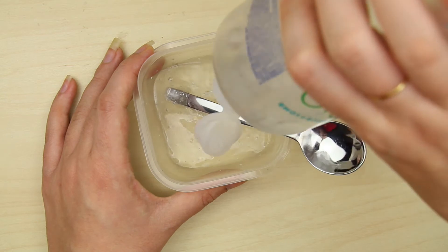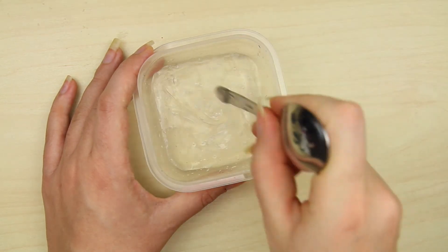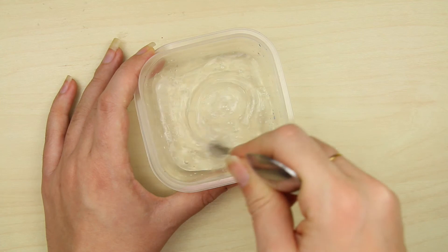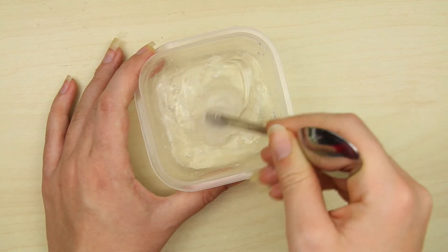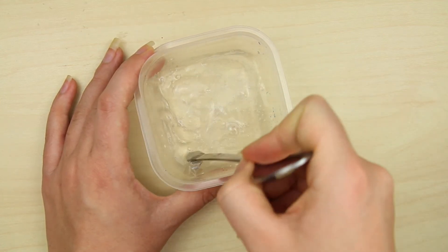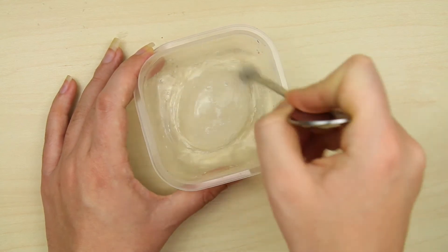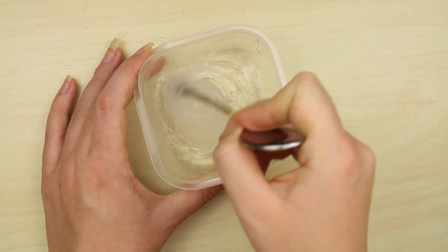Now to create the slime, start adding some contact lens solution to the glue. By the way, the baking soda before is really important or there won't be a reaction with the contact solution. Keep adding the solution until the slime starts to form.